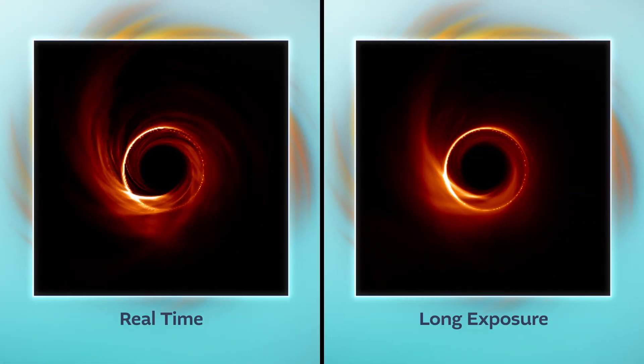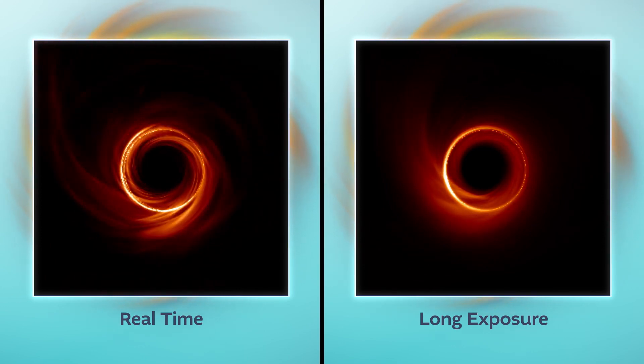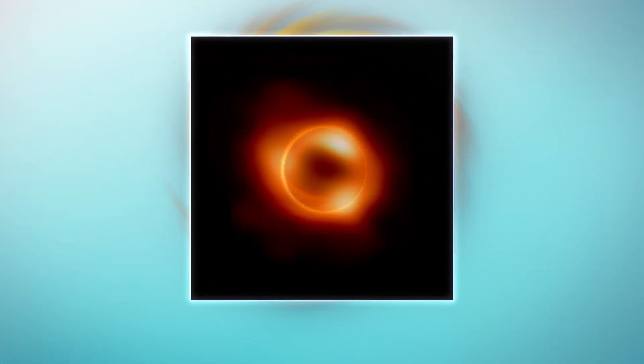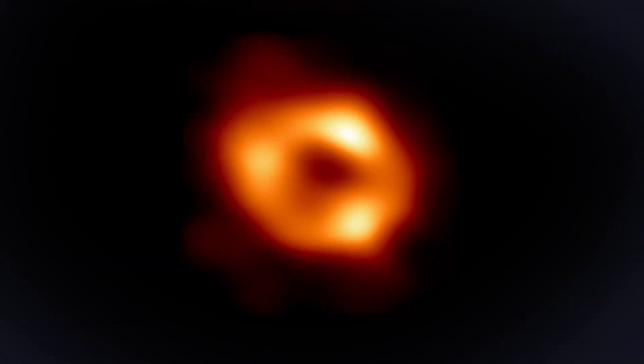The image we end up with is thus the equivalent of a long exposure photograph, with lots of motion blur capturing the average appearance of the black hole rather than just a single freeze frame.